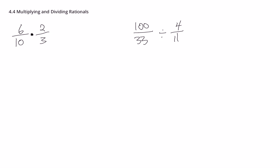Let's do a couple of examples just with basic fractions to remember how things work. With a fraction, this first one we've got 6 over 10 times 2 over 3. The rules for multiplying fractions are you just multiply the top numbers and multiply the bottom numbers, and then you would simplify them.